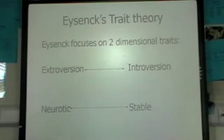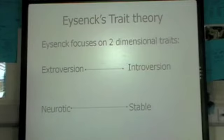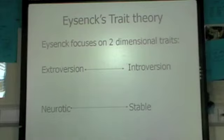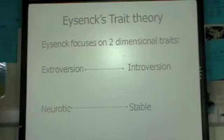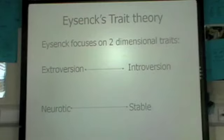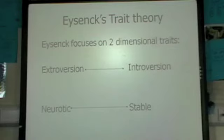One of the main trait theories is Eysenck's, which suggests we are somewhere on two dimensions: extroversion to introversion, and neurotic to stable. An extrovert is someone who is lively and outgoing, while an introvert is more happy in their own company, quiet and reserved. Neurotic means very moody — up and down, happy one minute, sad the next.